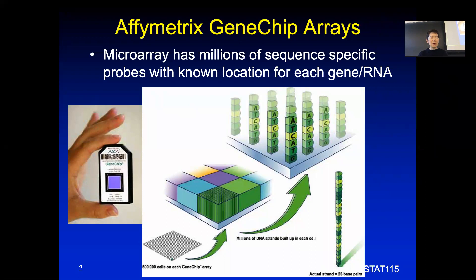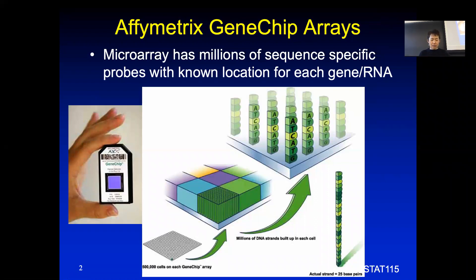The Affymetrix microarray is about one centimeter squared. This array has millions of probes. If you zoom in, this is the array, and if you look at one corner, this is one probe location. On this location you can see there are still millions of probes that contain the same sequence. The company would know at which X and Y location this probe is having a certain sequence, and it's supposed to target a different gene in the genome.